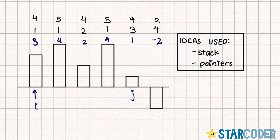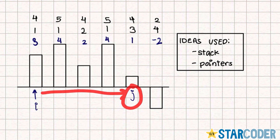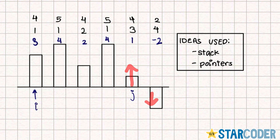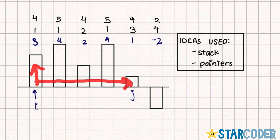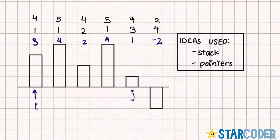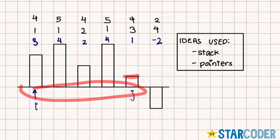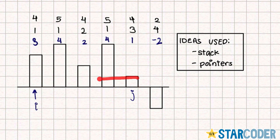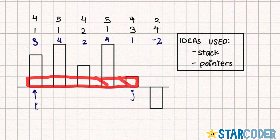We start at i and keep incrementing until we reach j, where j is the last value that is either positive or negative depending on i. If i is positive, j is the last value where everything in the range from i to j is also positive. We find j because for the minimum value within this range — the smallest of these heights — we can remove a continuous range from i to j without having to lower it again.